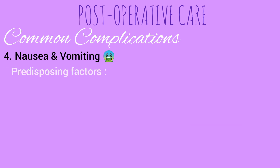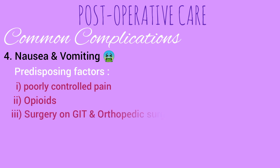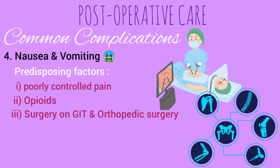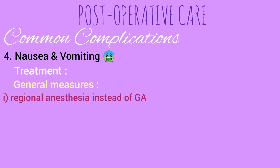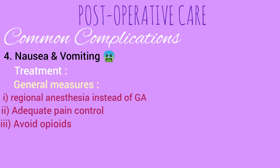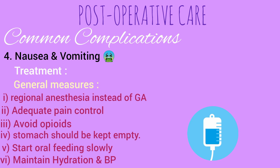For nausea and vomiting, the predisposing factors are poorly controlled pain, use of opioids, surgery on the gastrointestinal tract, orthopedic surgery, female gender, and young adults. Treatment involves general measures and drug therapy. In general measures, regional anesthesia should be used instead of general anesthesia whenever possible, adequate pain control should be given, opioids should be avoided. The stomach should be kept empty, oral feeding started slowly, and hydration and blood pressure maintained with fluids such as crystalloids or colloids.